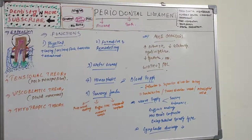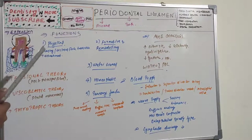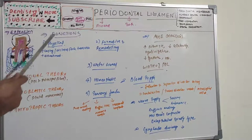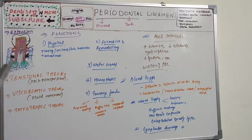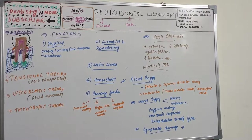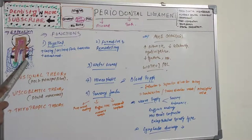In physical functions, the first is that the PDL provides a soft tissue casing to protect vessels and nerves from injury by biomechanical forces. The second physical function is transmitting occlusal forces to the bone.